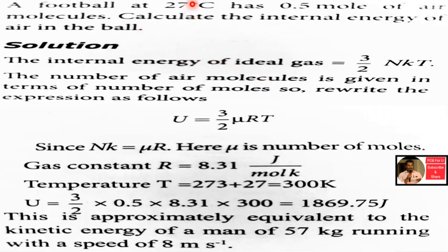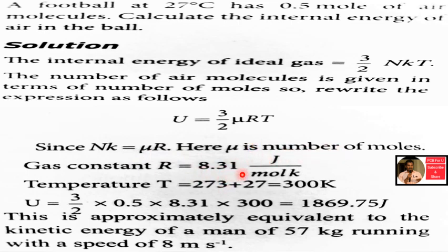There are 0.5 moles of air. We need to find the internal energy of an ideal gas. The number of molecules is given in terms of number of moles. The formula is U equals (3/2) mu R T. With mu equals 0.5 moles, R equals 8.31 J per mole per Kelvin, and temperature 27 degrees Celsius equals 300 Kelvin, the internal energy works out to approximately 1875 J.